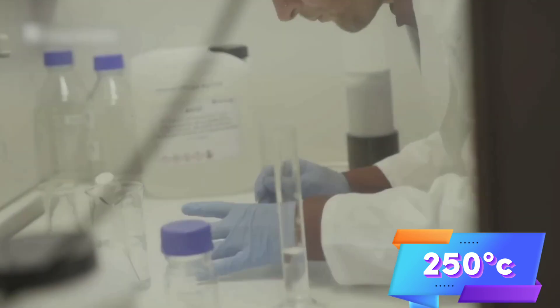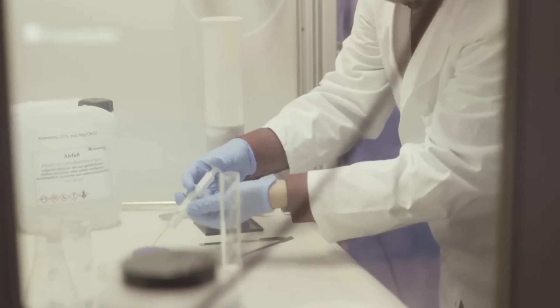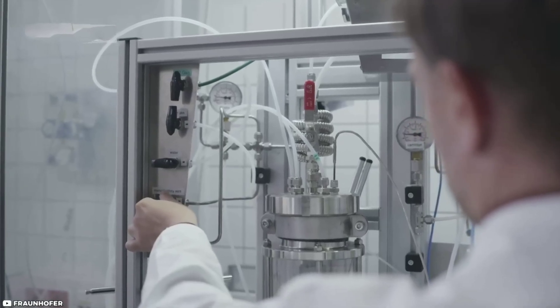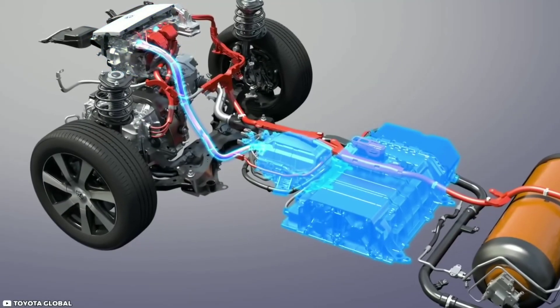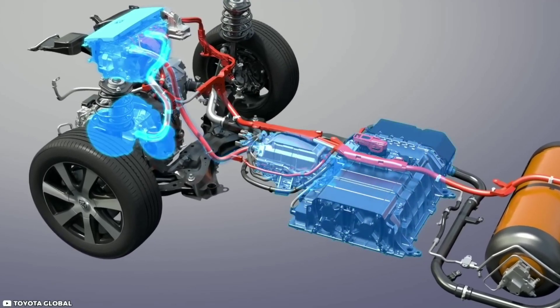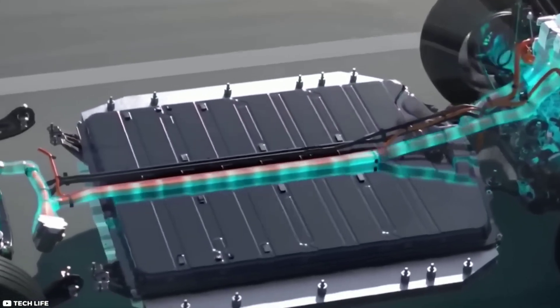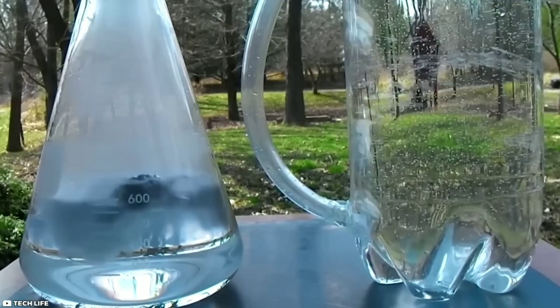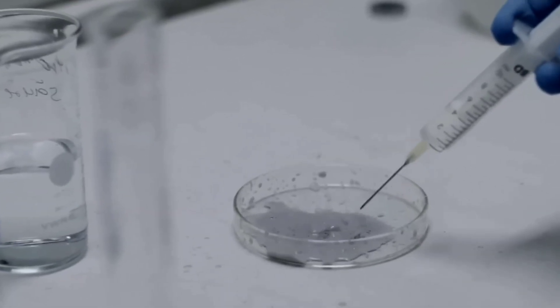Power paste can release hydrogen energy by reacting with water in a special chamber. A plunger mechanism pushes the paste into the chamber where it splits water into hydrogen and oxygen. The hydrogen then powers a fuel cell that generates electricity for the vehicle. The amazing thing is that half of the hydrogen comes from the water itself, so the power paste does not need to store as much hydrogen as other methods.